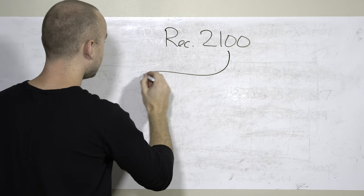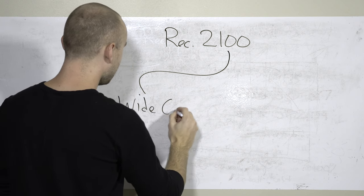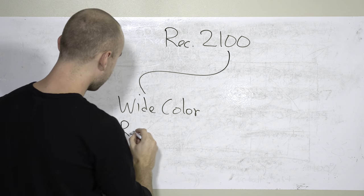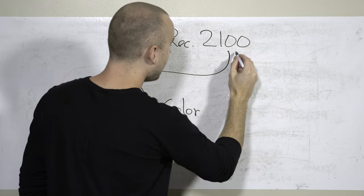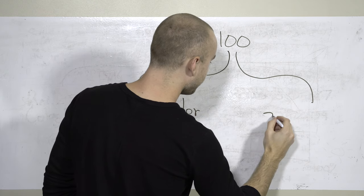So if we look at it, it will have wide color, also known as REC 2020, and also the gamma